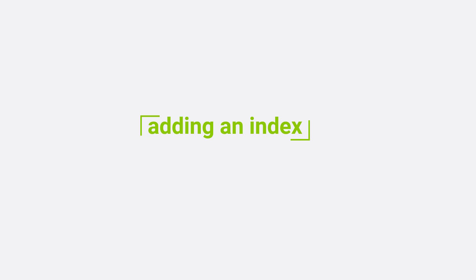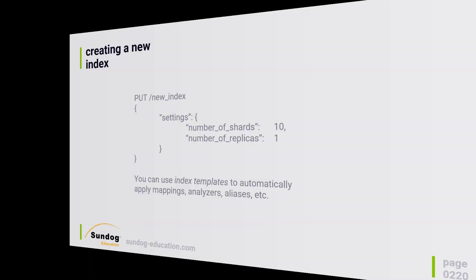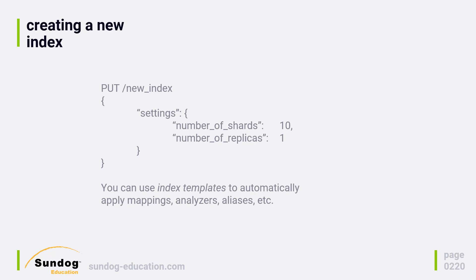Once you've decided how many shards your new index needs, you need to actually create that index and specify the shard count you want. Let's talk about how to actually do that, and afterwards we'll talk about how you can use new indexes as a scaling strategy of its own. Here's the syntax on how to specify the number of primary shards and replicas that you want on your new index.